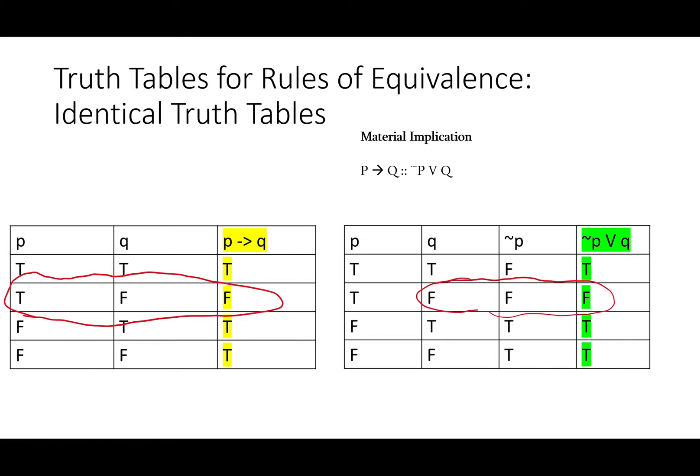If we want to move in the other direction, we could say something like this. If you have neither not P nor Q, if you don't have either of those things, you don't have a false P and you don't have a true Q, then well, you don't have a P then Q either.